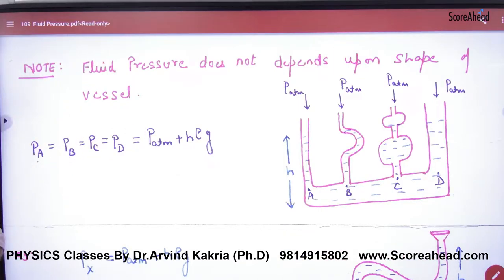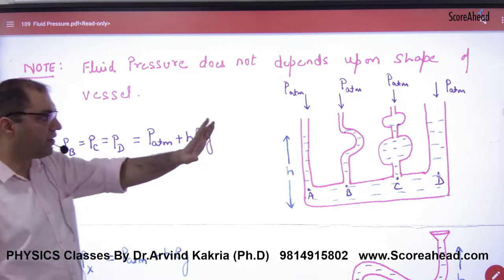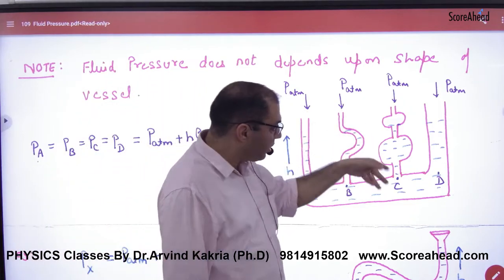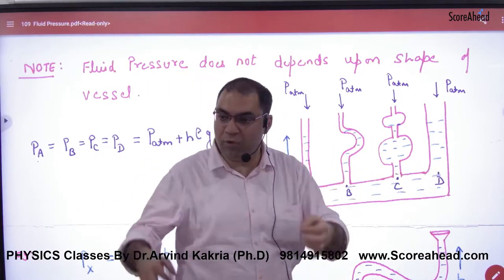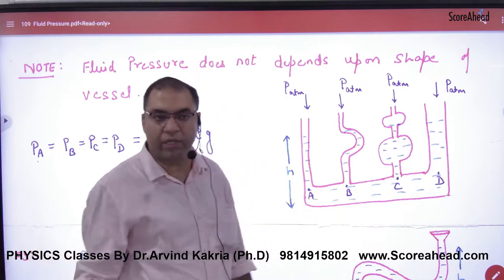After that, the next problem is the third point of the paradox. If the height H contains liquid, then the pressure below at points A, B, C, D will remain the same. And how much? H-ρg.